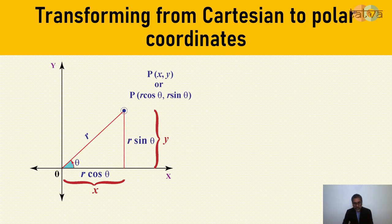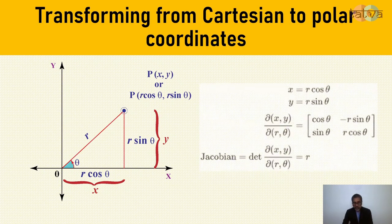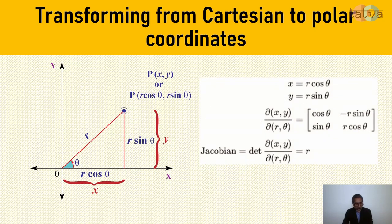So how do you transform from Cartesian to polar coordinates? A point P with Cartesian coordinates x and y is being transformed into polar variables r and theta using simple trigonometry. We get the transformation equations x equals r cos theta and y equals r sin theta. R is the length of the radius vector joining the origin to point P. X is a projection of the vector on the x-axis and y is a projection on the y-axis. The Jacobian in this case happens to be R.